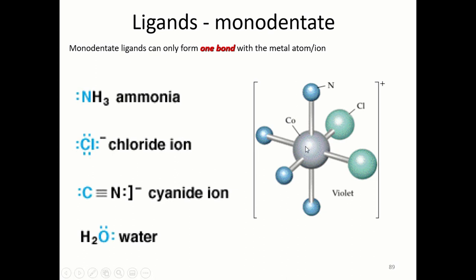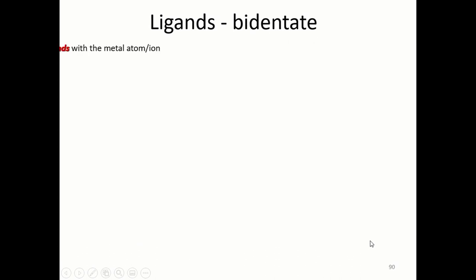This is just showing you an idea of a complex with a central metal ion and different things that are donating in and the colour of it. This is the complex, it looks very complicated. This is cobalt with four ammonium ions or ammonia ions and two chloride ions.